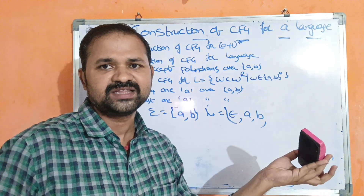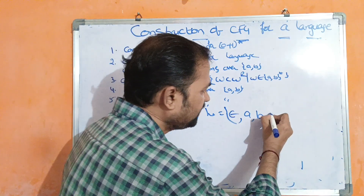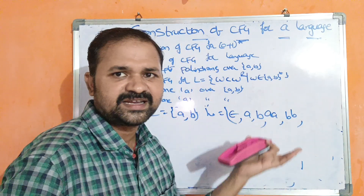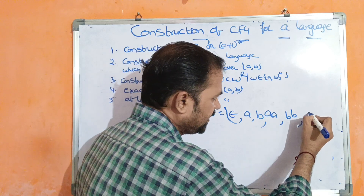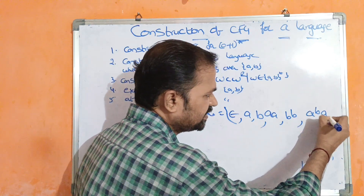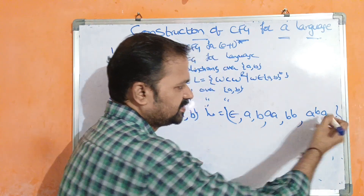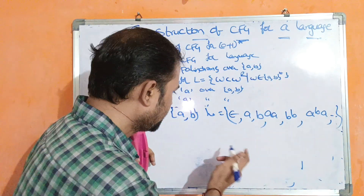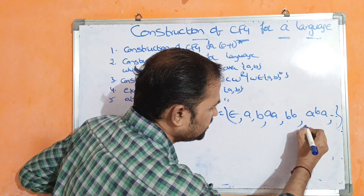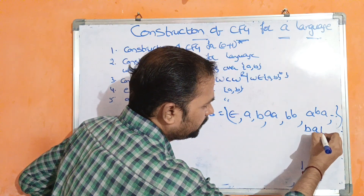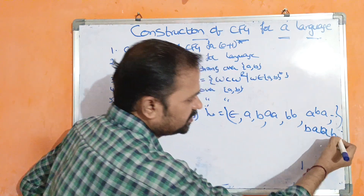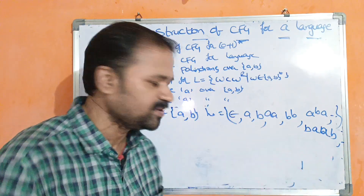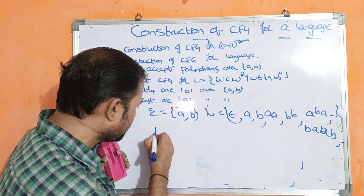If you take AA, it is a palindrome. BB is a palindrome. ABA is a palindrome because its reverse is ABA. BABAB is also a palindrome. For a palindrome, the reverse of the string equals the given string. If the string starts with A it also ends with A; if it starts with B it ends with B.